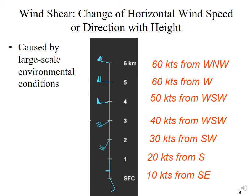Looking at the vertical wind barbs between the surface and six kilometers: at the surface, the winds are from the south-southeast at 10 knots, and then they switch gradually to a westerly flow, eventually reaching 60 knots from the west-northwest by six kilometers. This wind shear has both directional shear and speed shear, and it's basically caused by the large-scale environmental conditions.